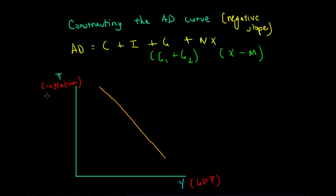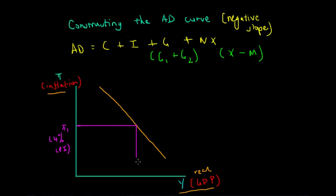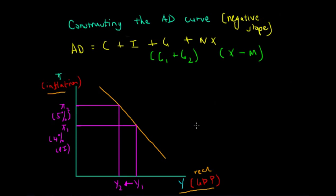The aggregate demand curve is mapped against inflation — also the general price level of the economy — and income, denoted Y, or real GDP. Let's assume the economy starts off at PI1, so the inflation rate is 4% CPI. This corresponds to an income or GDP level at Y1. Now say for whatever reason this inflation rate were to increase to 5%, to PI2 — we can see that the income or overall GDP decreases to Y2.